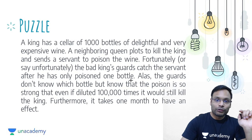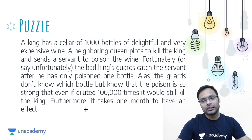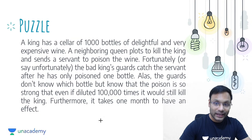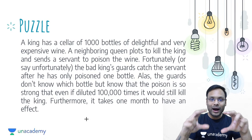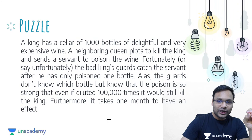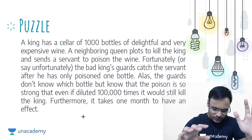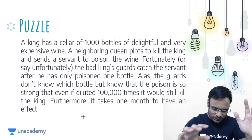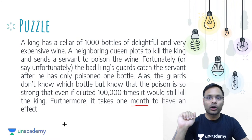The guards don't know which bottle is poisoned. Even if that particular bottle's wine is diluted lakhs of times, it would still kill the king — even one drop would cause the king's death. The poison takes one month to show its effect. So if someone drinks the poison, death occurs after one month.